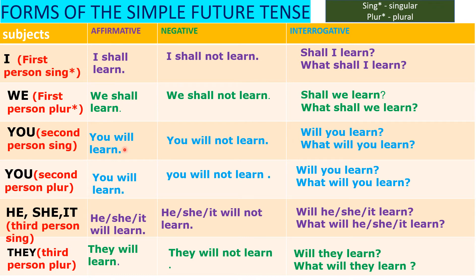For first person — I and We — we use 'shall.' For second and third person, we use 'will.' 'Will' expresses surety or strong intention. 'Shall' is not normally used with second or third person. When first person is used with 'will,' it expresses strong determination. These are the key points for shall and will.